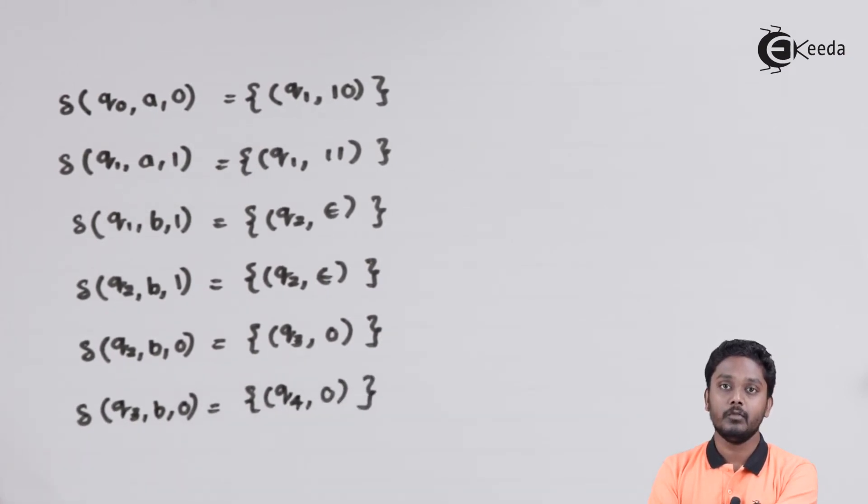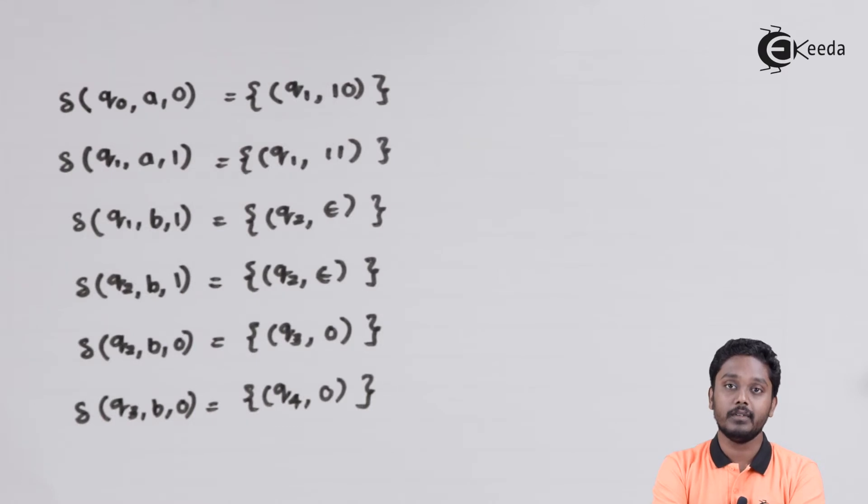Again, from Q3, with B as the input symbol and 0 as the top of the stack, we go to the final state Q4. Here, we have achieved number of B's exactly exceeding number of A's. And hence, from state Q4, we will have a loop to count all the exceeding B's and we can ignore them.